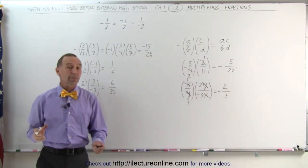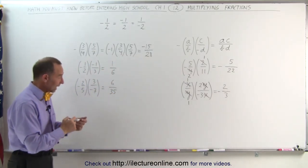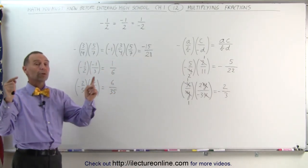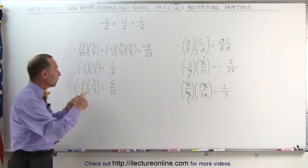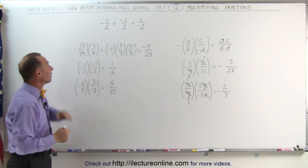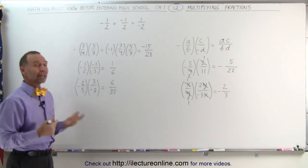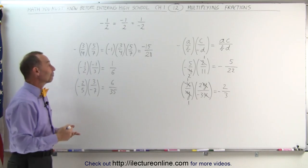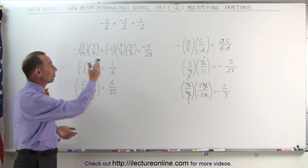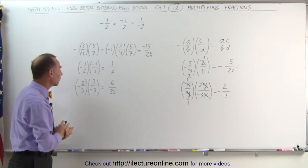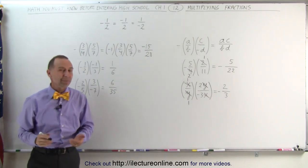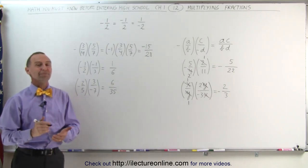And that's how we multiply fractions. When we multiply fractions, we multiply the numerators, we multiply the denominators, and then we count the number of negative signs. When there are an odd number of negative signs, the answer is negative. When there's an even number of negative signs, the answer is positive. And that's how it's done.